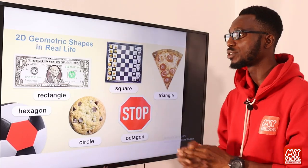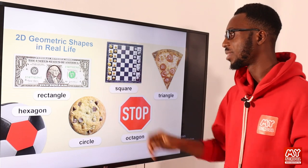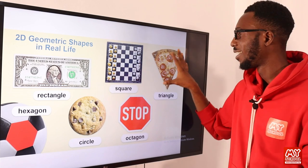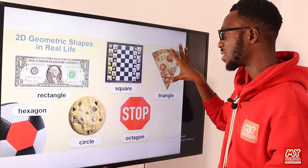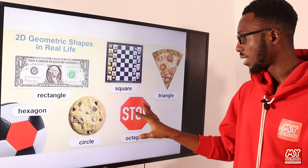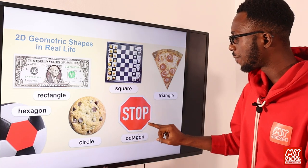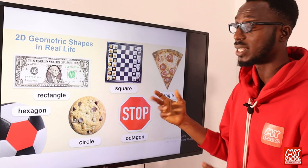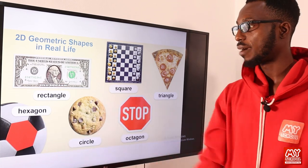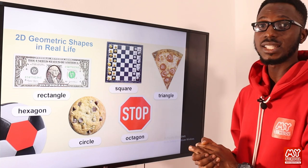Real-life examples of 2D shapes: you have your currency, you have your chessboard, this is a pizza slice. Then you have your stop sign — it's an octagon. If you count: 1, 2, 3, 4, 5, 6, 7, 8 — eight sides. You have your circle. These are very good examples.